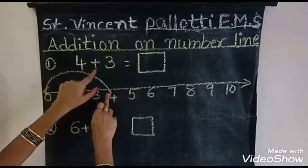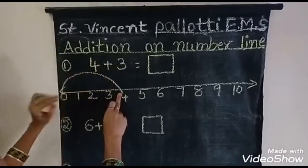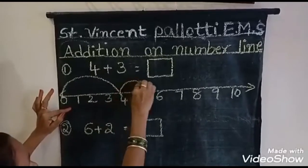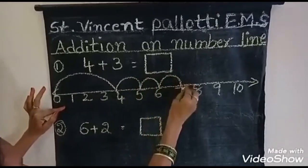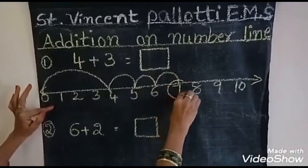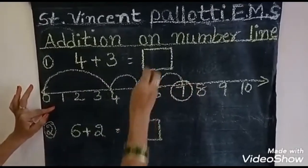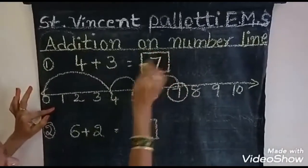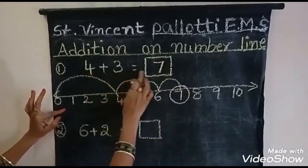Now, plus 3 and add jayasi yali. See, 1, 2, 3. Here, answer is 7. Answer is 7. 4 plus 3 is equal to 7.